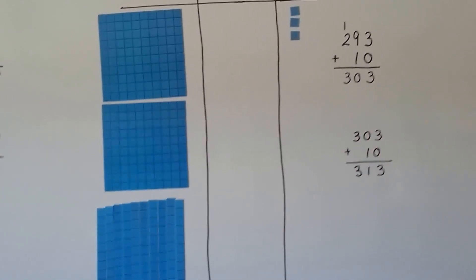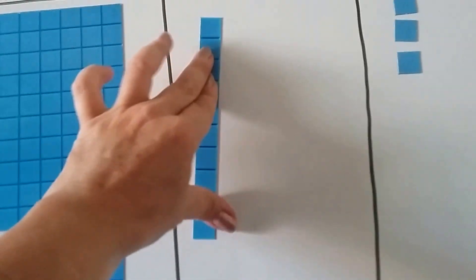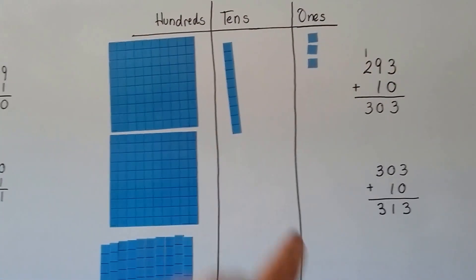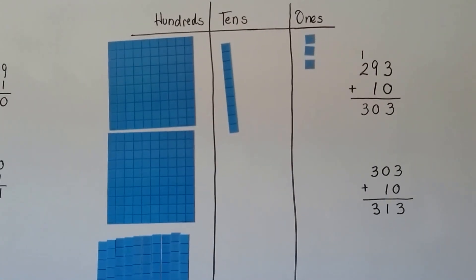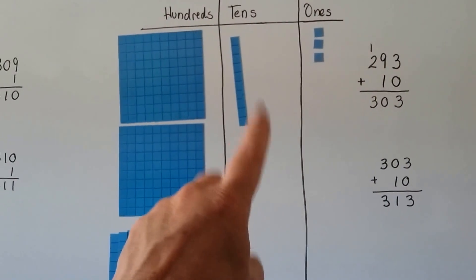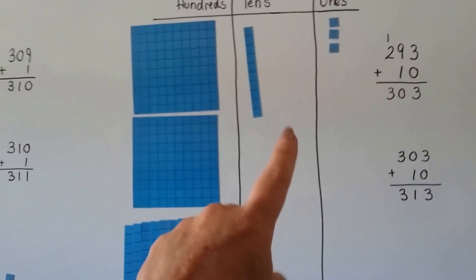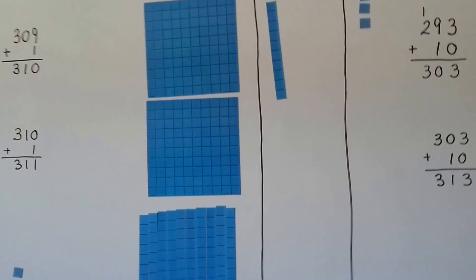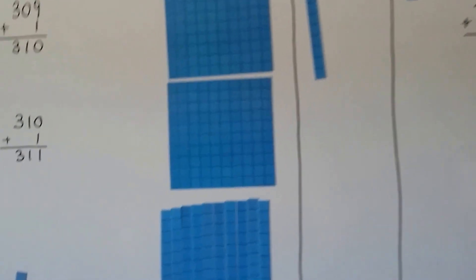If I add one more ten to 303, it goes into the tens place and we have three hundreds, one ten, and three ones — 313. I can keep adding tens, and when I get ten of them I put them into the hundreds place. Every time it overflows — because we can't have two digits in one place value — it resets to zero and the next place gets one.